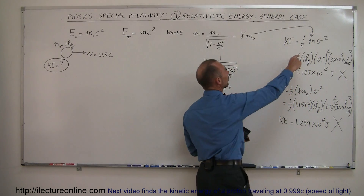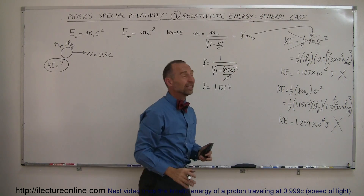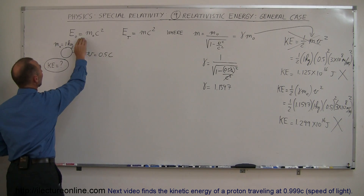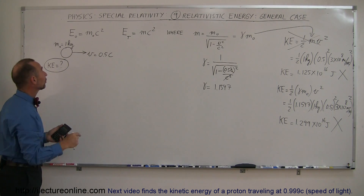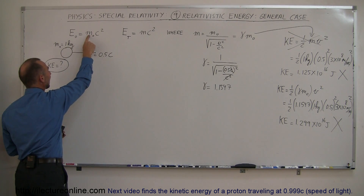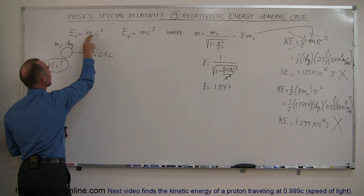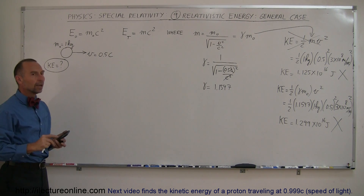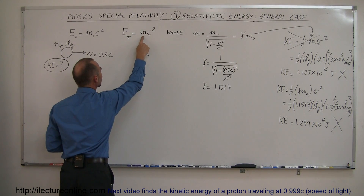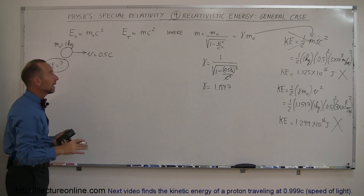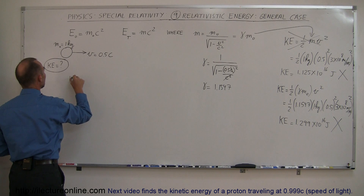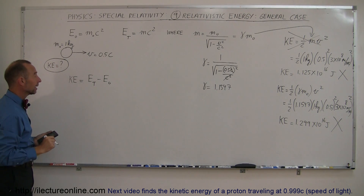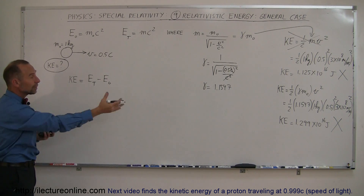It doesn't look like we can use the traditional equation in any way, shape, or form for relativistic kinetic energy — you will not get the right answer. What you need to do instead is use the relationship between rest mass energy and total energy. Most people know that E equals mc squared. If the object is not moving, it has rest energy m-naught c squared. The total energy is the relativistic mass times c squared. Relativistic kinetic energy is the difference between total energy and rest mass energy.